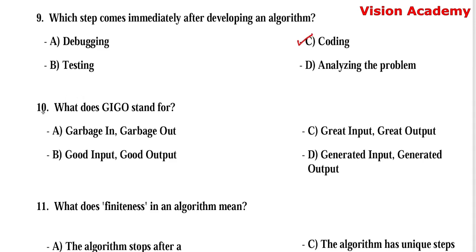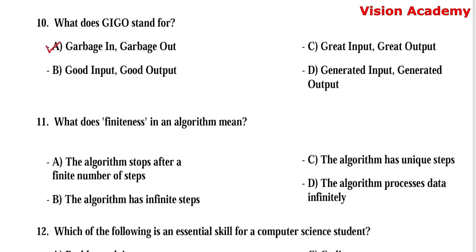Question number 10: What does GIGO stand for? Option A, garbage in, garbage out. Option B, good input, good output. Option C, great input, great output. Option D, generated input, generated output. Here, option A, garbage in, garbage out, is the right answer.